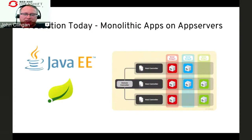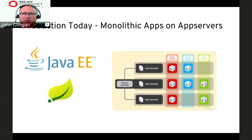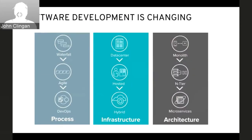Most organizations have traditional Java EE application servers running Java EE or Spring applications. What's interesting about Java EE application servers is that combined with an operations group, they provide many services on behalf of the developer — so as a developer I can focus on business logic and not worry about supporting services like provisioning, high availability clustering, or session replication.